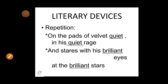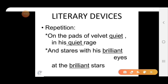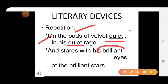The next literary device used in this poem is repetition. In 'on the pads of velvet quiet, in his quiet rage,' the word quiet is repeated. And second time it is used in the line 'and stares with his brilliant eyes at the brilliant stars' — brilliant and brilliant is repeated. That is why it is called repetition.